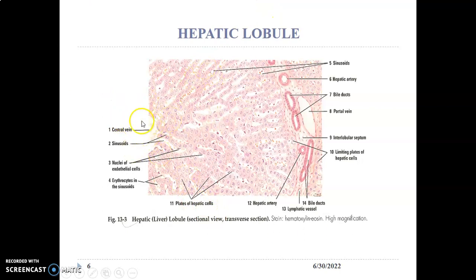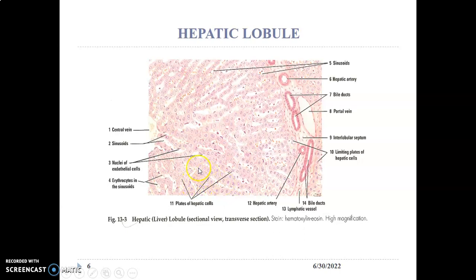This is the hepatic lobule with a central vein at the center, and you can appreciate hepatocytes radiating from the central vein — they diverge outward from the central vein. In between these rays of hepatocytes, we have endothelial-lined spaces called sinusoids. These sinusoids are separated from the hepatocytes by the space of Disse.